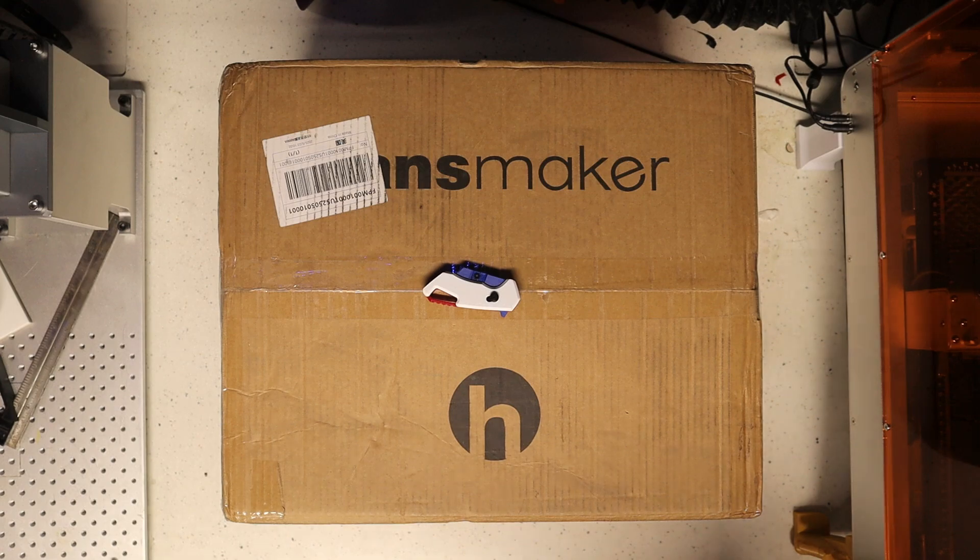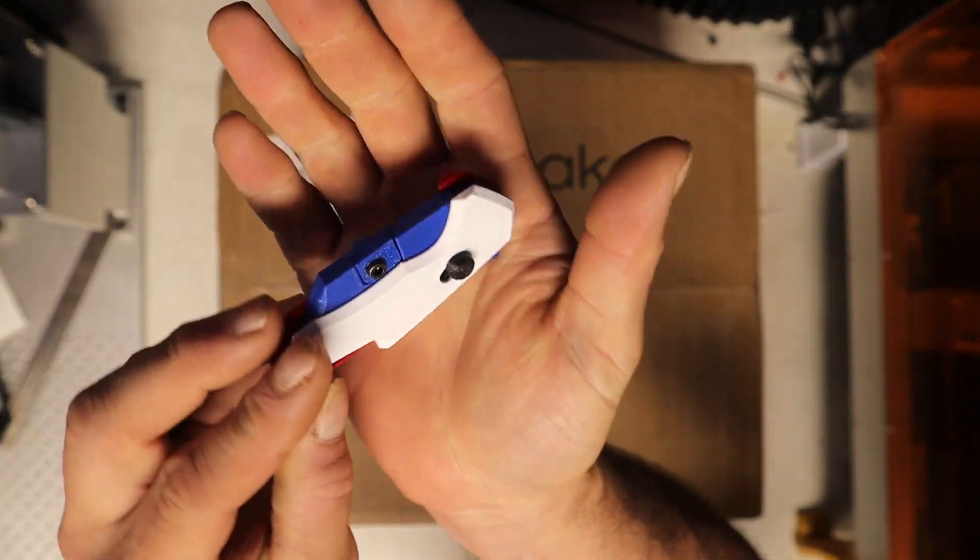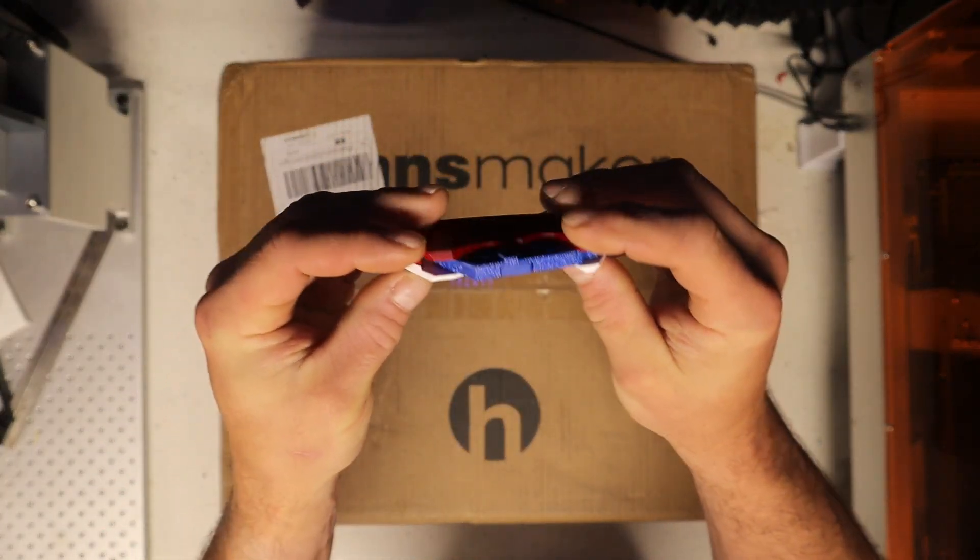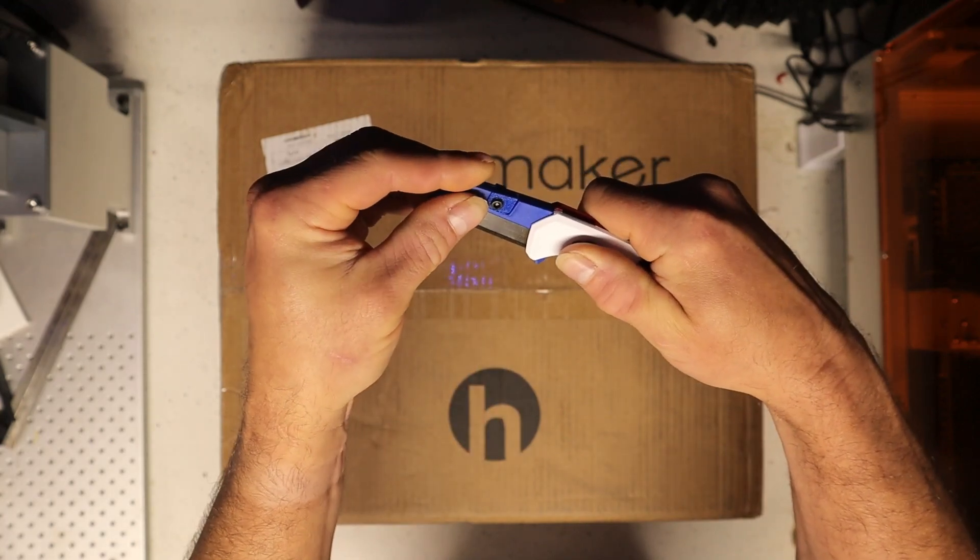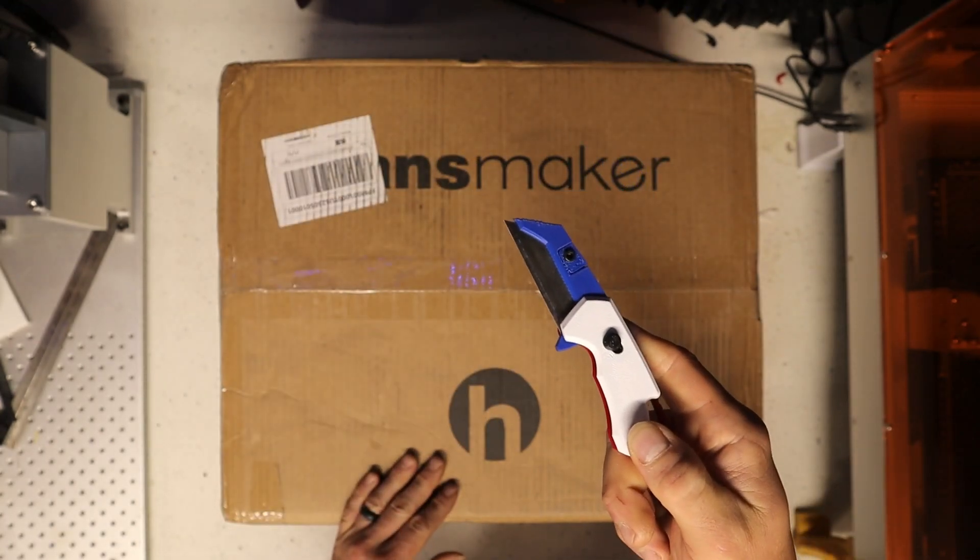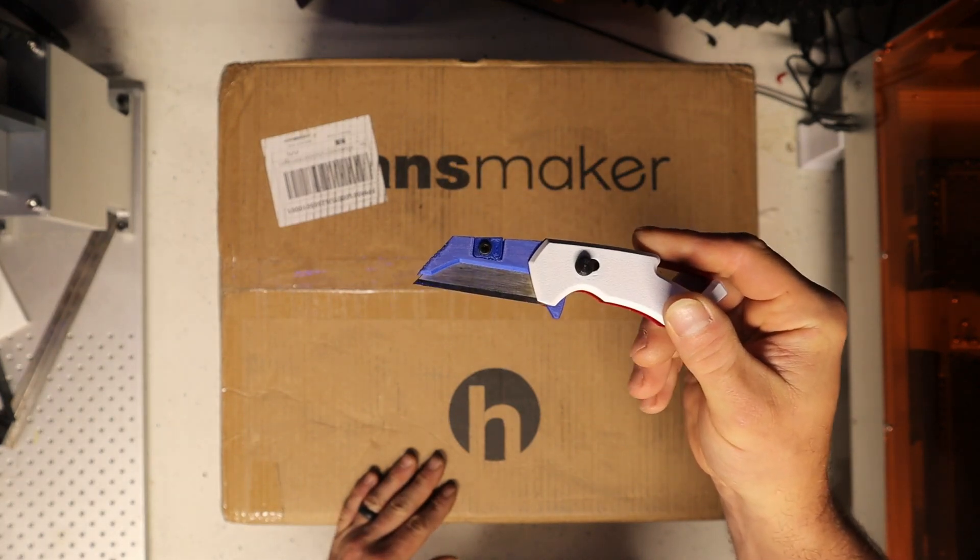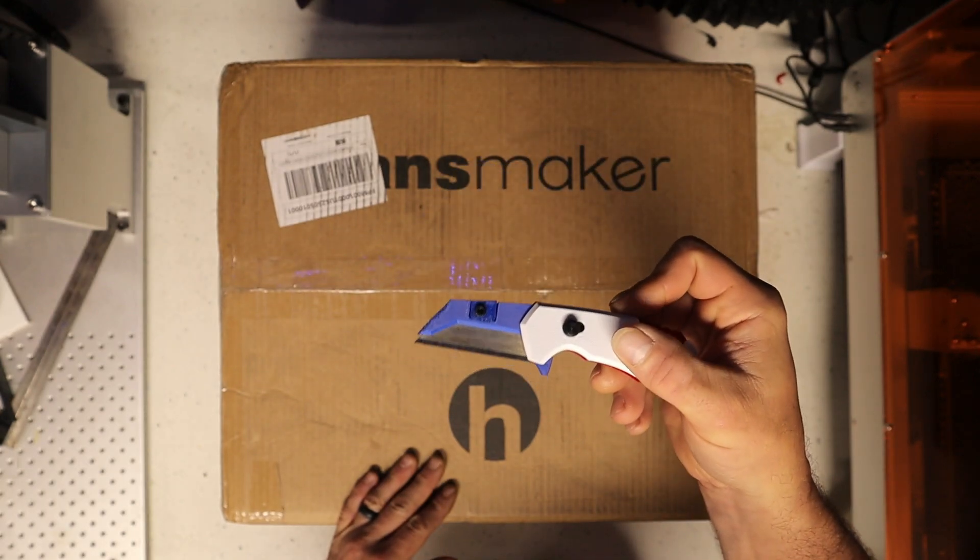Because today, we'll be using a 3D printed unboxing knife. Red, white, and blue themed. You slide this to open it, and then slide it back in to lock it in place. Just use the standard utility blade, and I'll link the print profile for this in the description. It's on the Bamboo Maker World site.